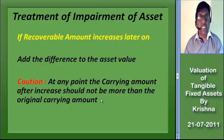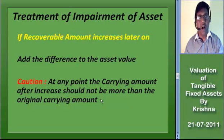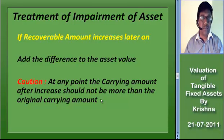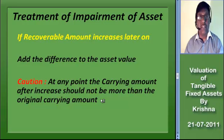If subsequently the recoverable amount increases, we have to make a reversal entry — that is, an addition shall be made to the already reduced carrying amount. However, the reversed carrying amount should never exceed the original carrying amount that would have existed had there been no impairment. This is because reversing the impairment loss would increase the carrying amount of goodwill, which indirectly recognizes internally generated goodwill, which is prohibited by Accounting Standard 26 on intangible assets.